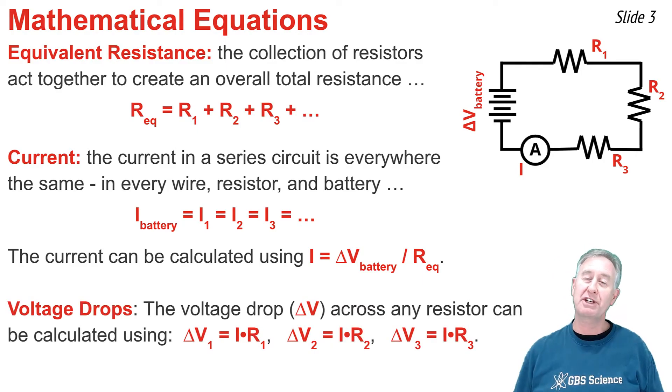As charge passes through a series circuit, it encounters a voltage drop as it passes through each of the resistors. This voltage drop can be calculated from knowledge of the current and the resistance of a resistor. For instance, in the first resistor, the voltage drop is simply the current multiplied by the resistance of that resistor. For the second resistor, V2 equals I times R2, and for the third resistor, ΔV3 equals I times R3.